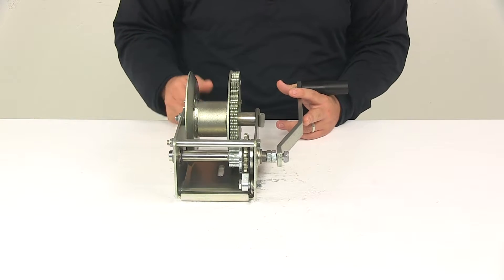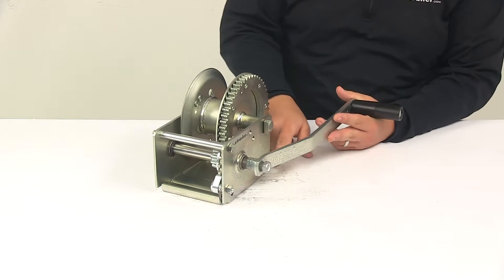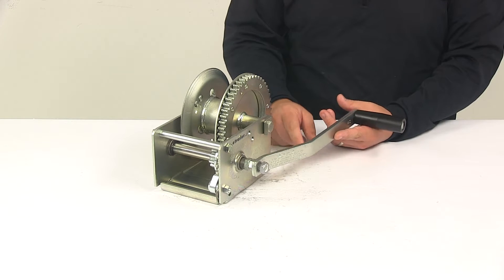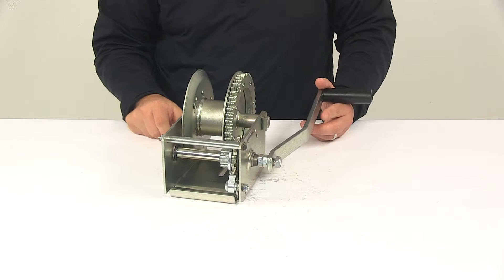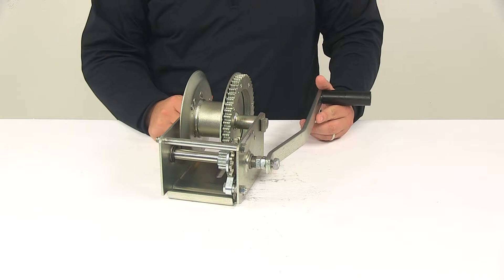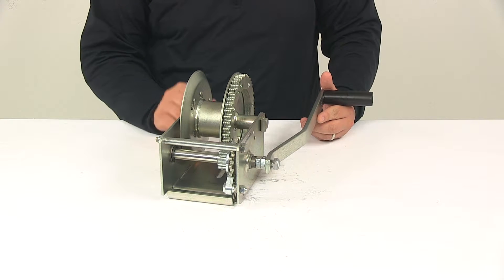There are two different capacities that I want to mention, and there are two different capacities that you'll notice engraved on the body of the winch. The first capacity is what's known as first layer capacity, that's 1,500 pounds. Second capacity is full drum capacity, and that's 700 pounds for this winch.